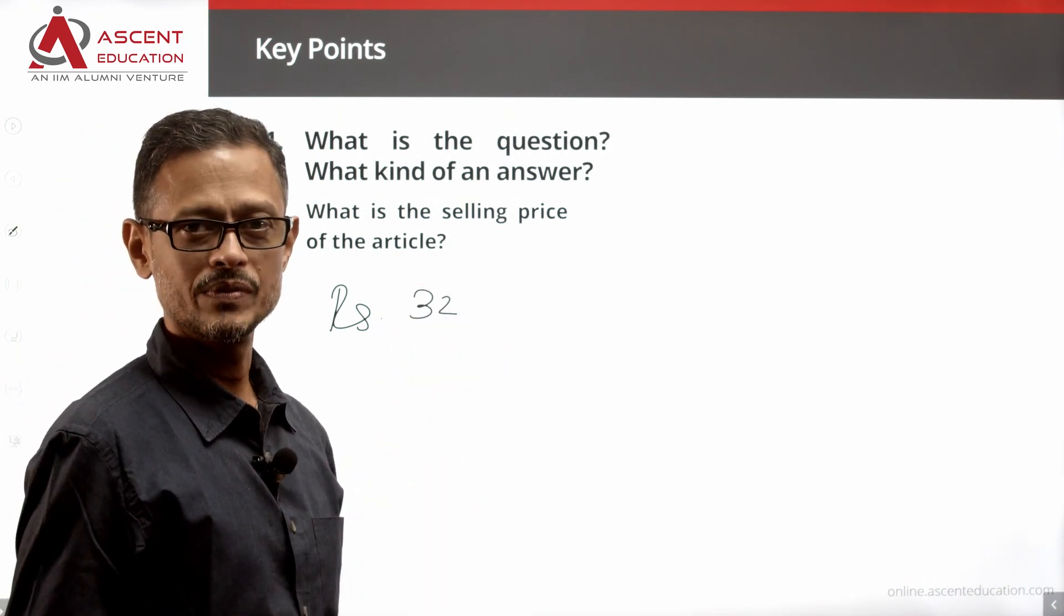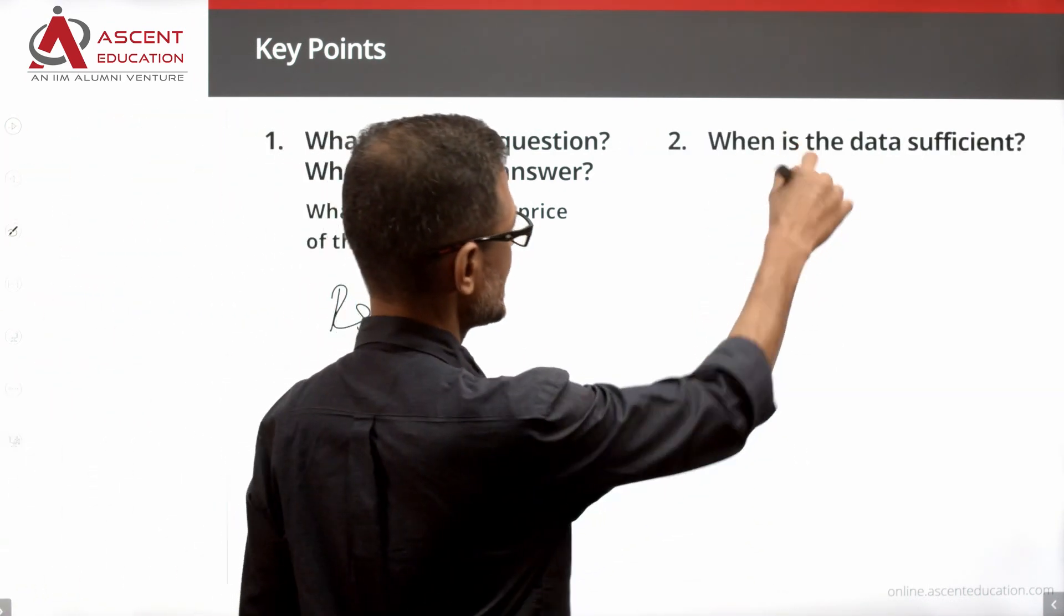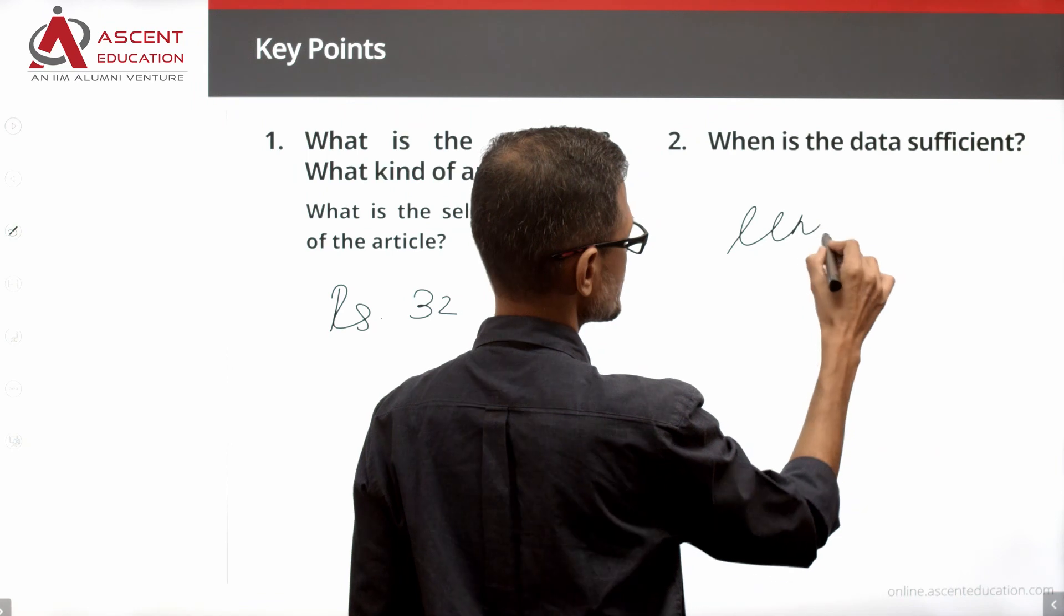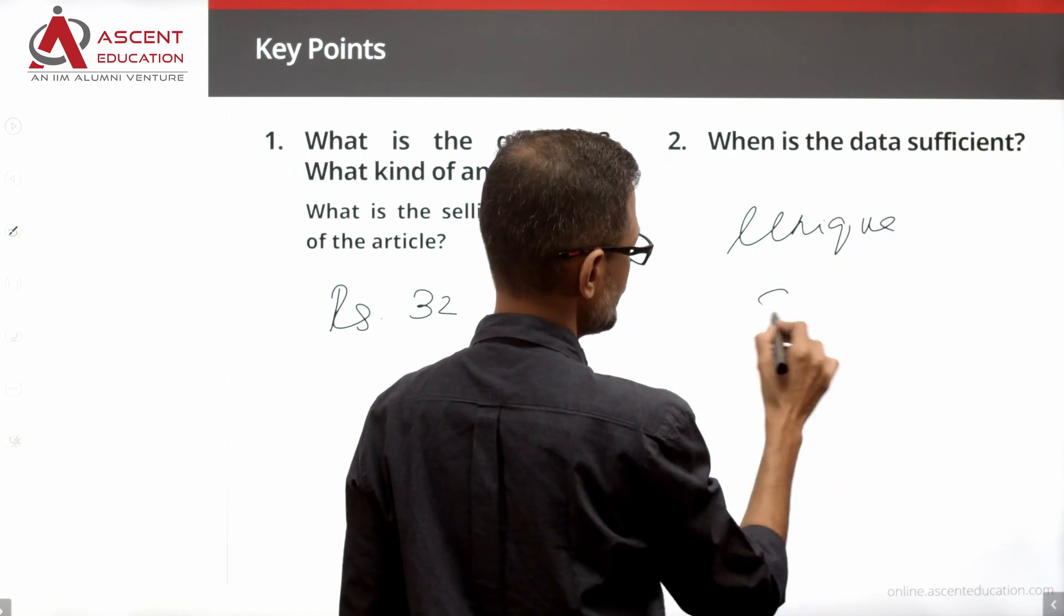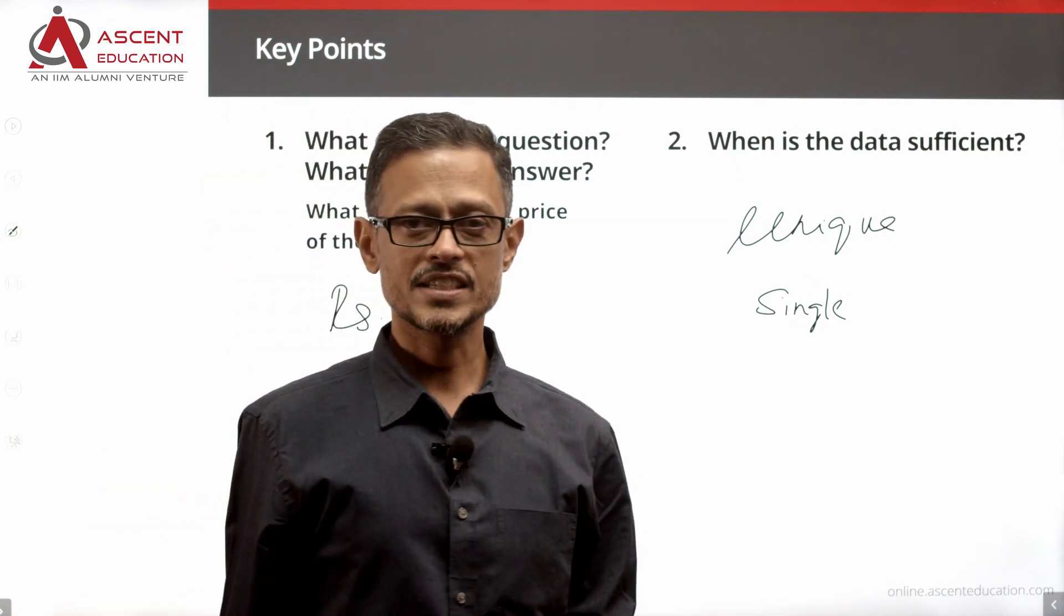The answer to the question is a number. Why is data sufficient? When we have a single value, when we have a unique value, data is sufficient. Let's start by looking at statement 1.